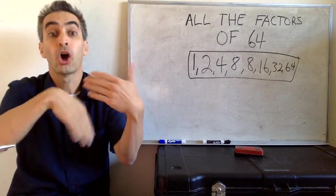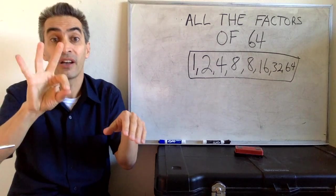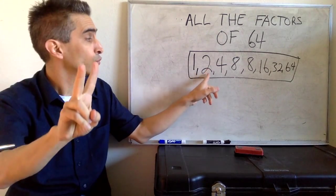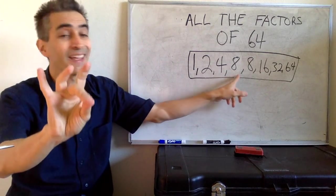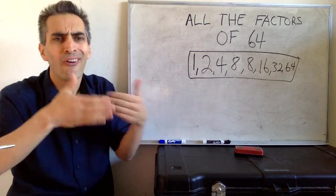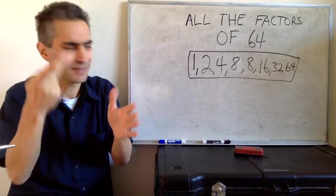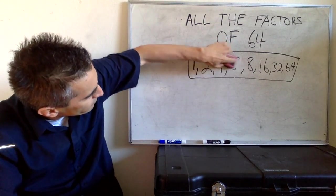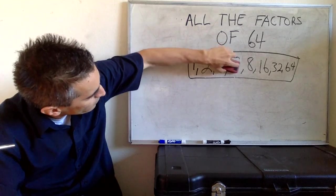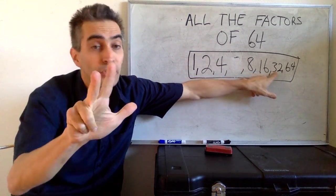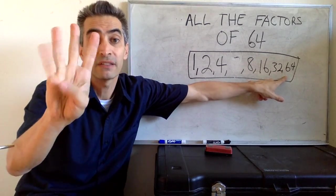Okay. Yeah. We're finished now. These are all factors of 64. We've got 1, 2, 4, 8. Oh, I almost forgot. We don't have to write 8 twice. 16, 32, and 64.